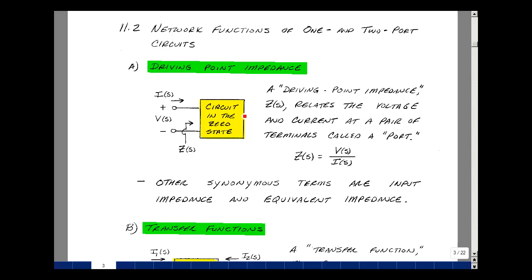Given a circuit in the zero state, let's define a pair of terminals and label the voltage across that is V(s) and the current entering is I(s). Then we can define a driving point impedance, Z(s), that relates the voltage and current to this pair of terminals, which we're going to call a port, in the following way.